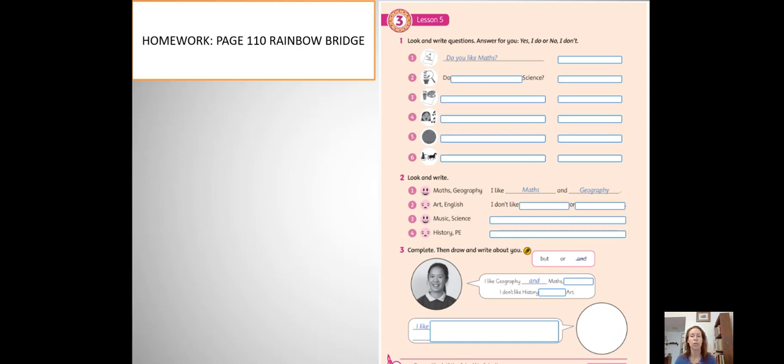Y el último es sobre ustedes. Primero van a completar sobre esta nena las palabritas que le faltan, que la encuentran arriba en el recuadro. Y luego hacen el de ustedes. Un ejemplo. A ver, ¿qué puedo escribir? Utilizando subjects. Materias del colegio. School subjects. I like English and history, but I don't like geography or art. Yes? Ese es un ejemplo mío. Ustedes hacen el suyo.